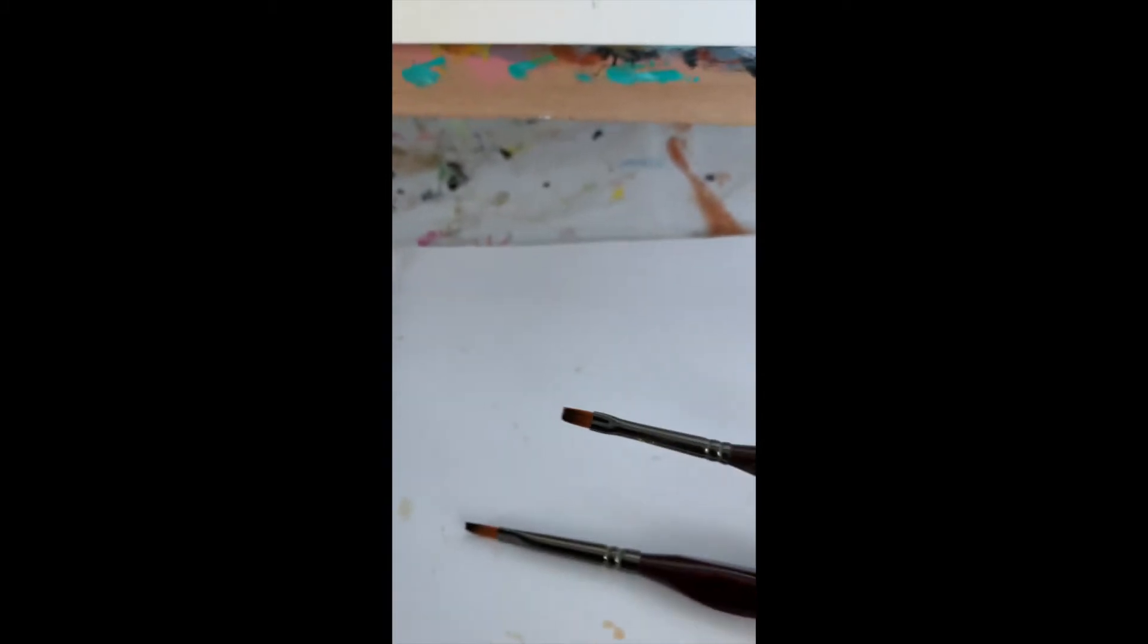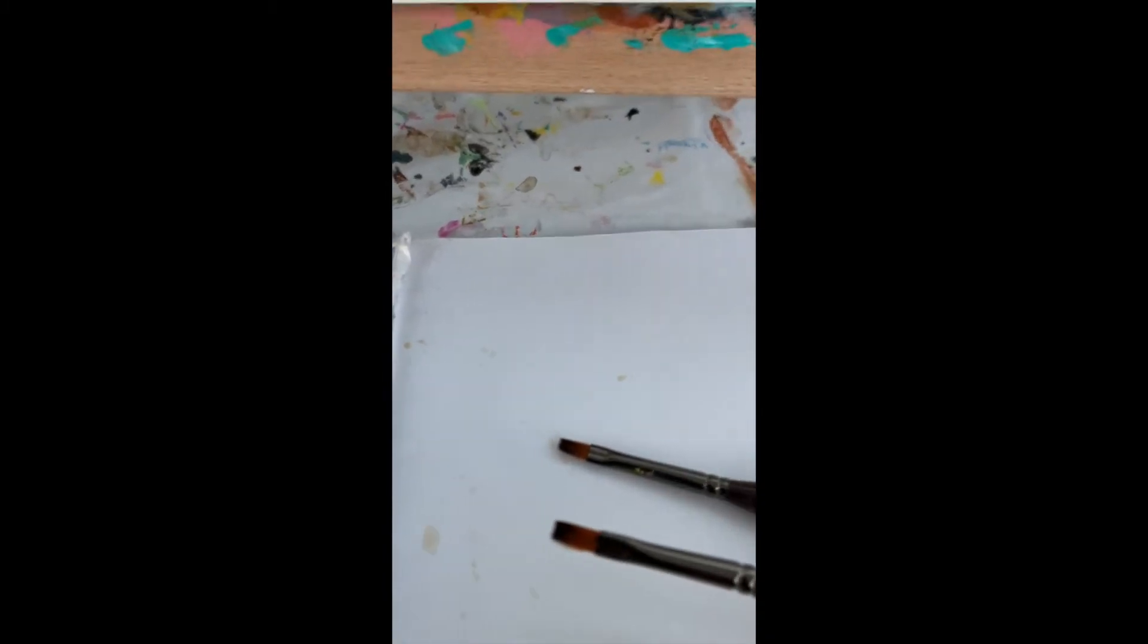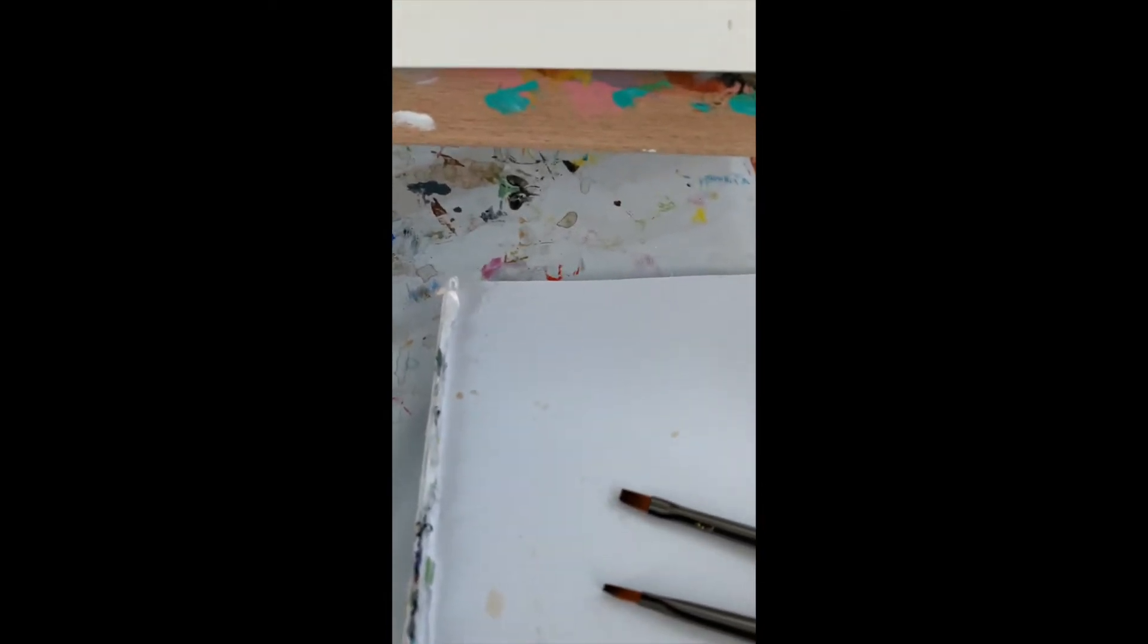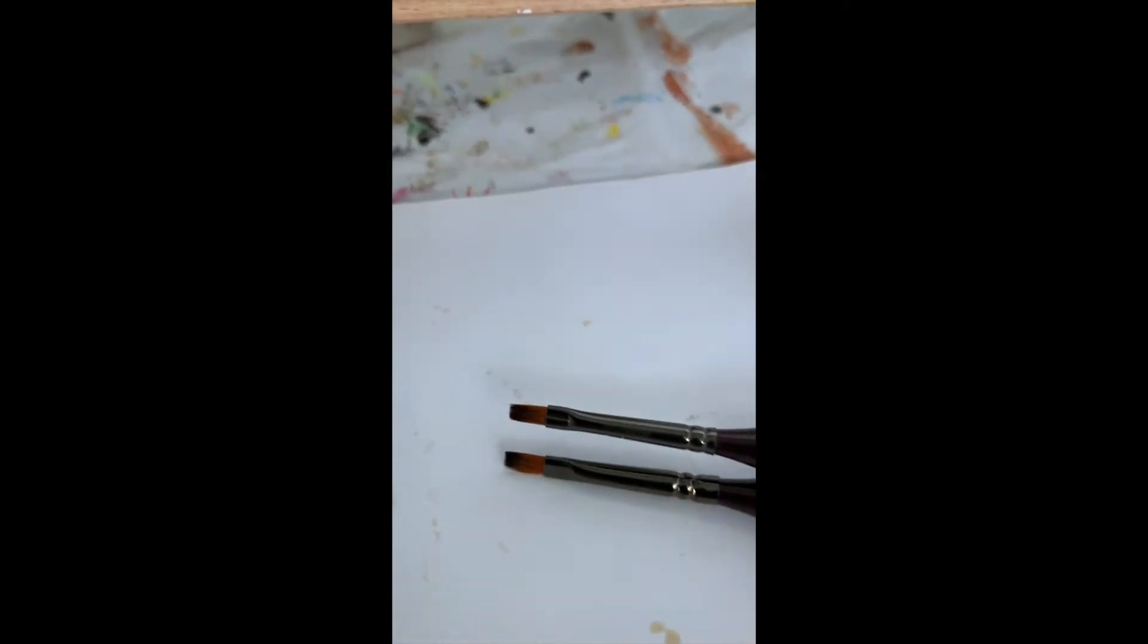Next, I'm going to demonstrate the flat brushes. I only have two, a 0 and a 1. As you can see, a flat brush is just that. It comes to a straight, flat end. Between the two of them, they really don't look very much different. But you can see the one on the top is just a little bit more narrow. We'll see what happens here.